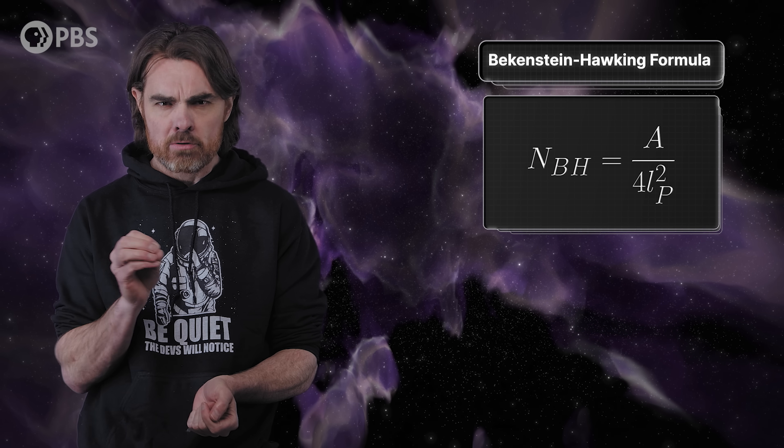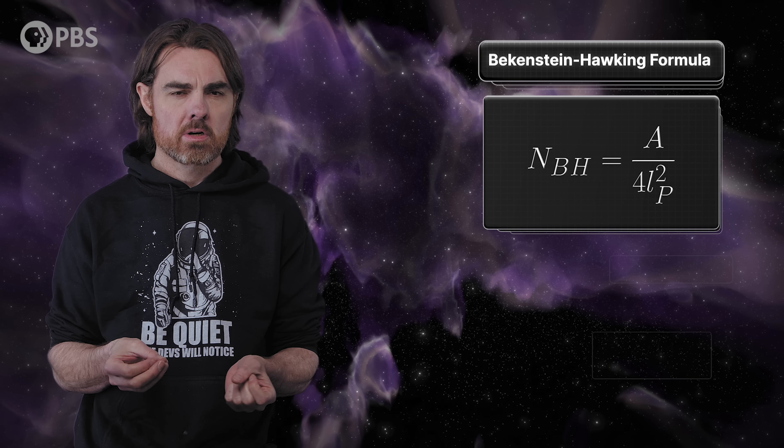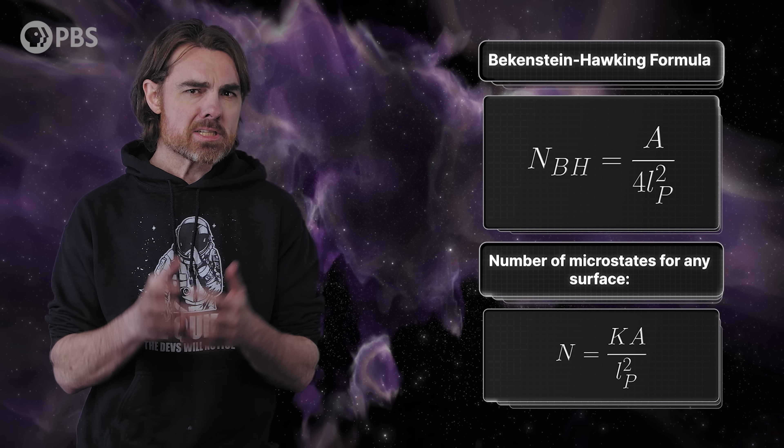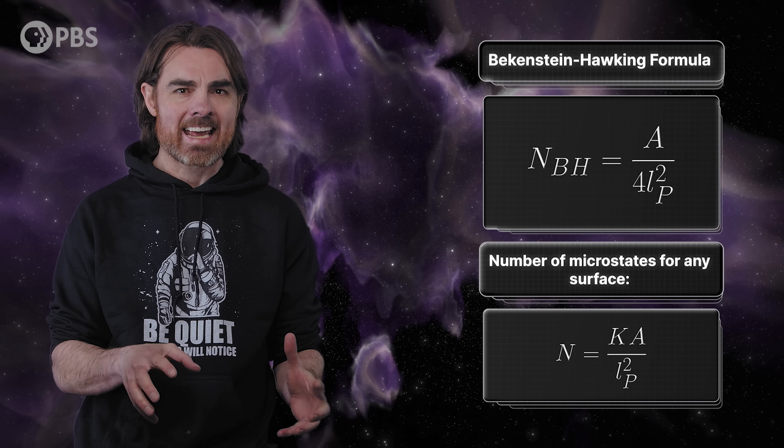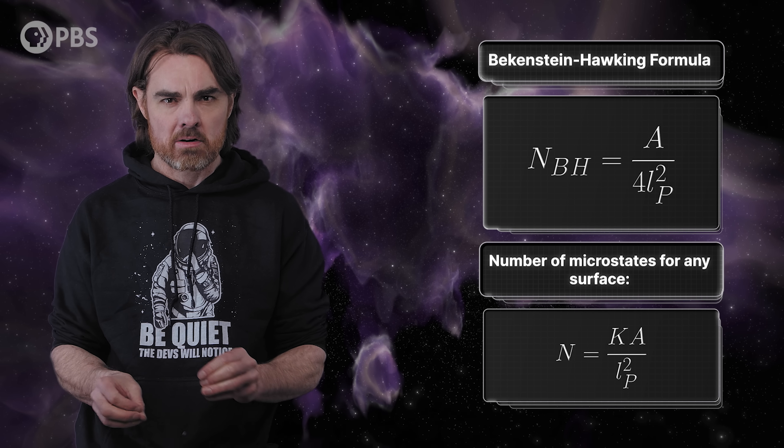We know the maximum value for this, it's the Bekenstein-Hawking entropy. So the number of Planck-length squares over that surface. For our surface, let's just assume that the entropy and n are still proportional to the surface area, but presumably smaller than for a black hole.